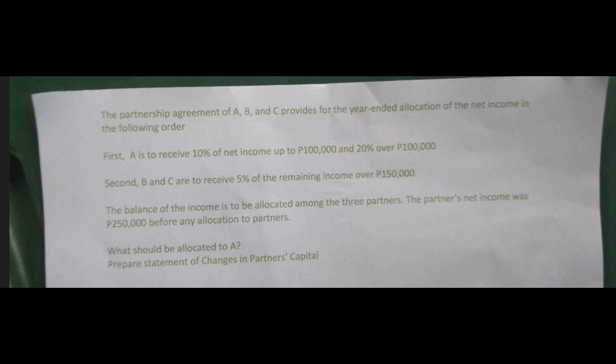The Partnership Agreement of A, B and C provides for the year-ended allocation of the net income in the following order. First, A is to receive 10% of net income up to 100,000, and 20% over 100,000. Second, B and C are to receive 5% of the remaining income over 150,000. The balance of income is to be allocated among the three partners. The partners' net income was 250,000 before any allocation to partners.